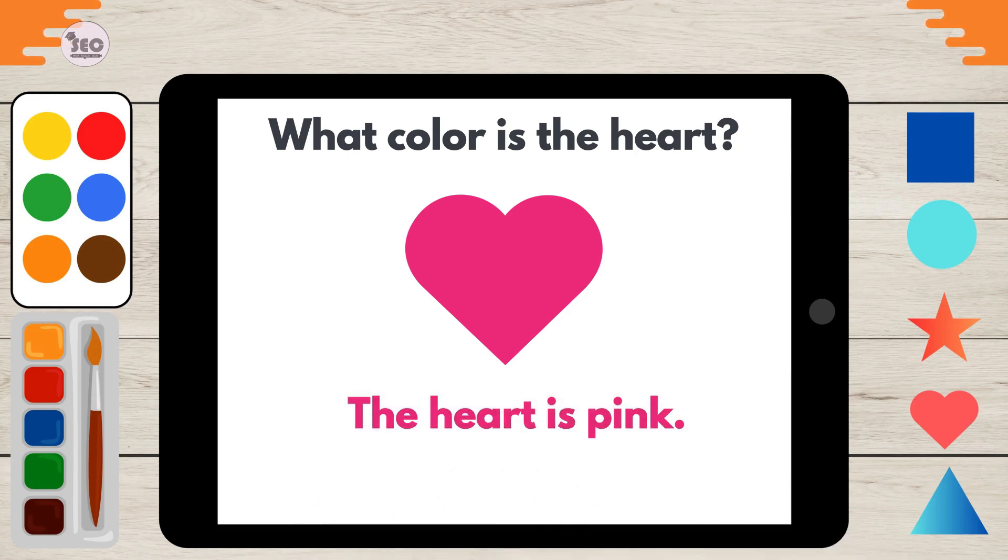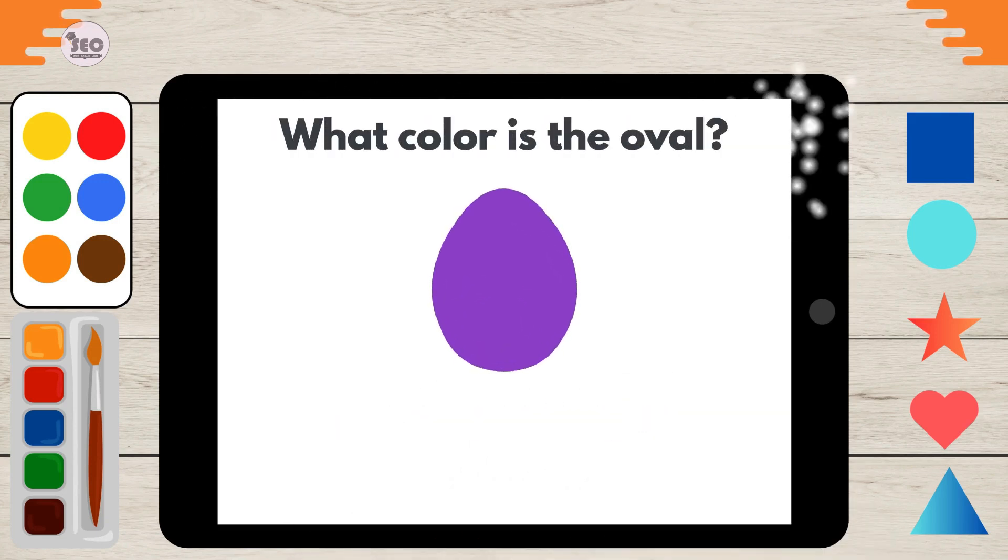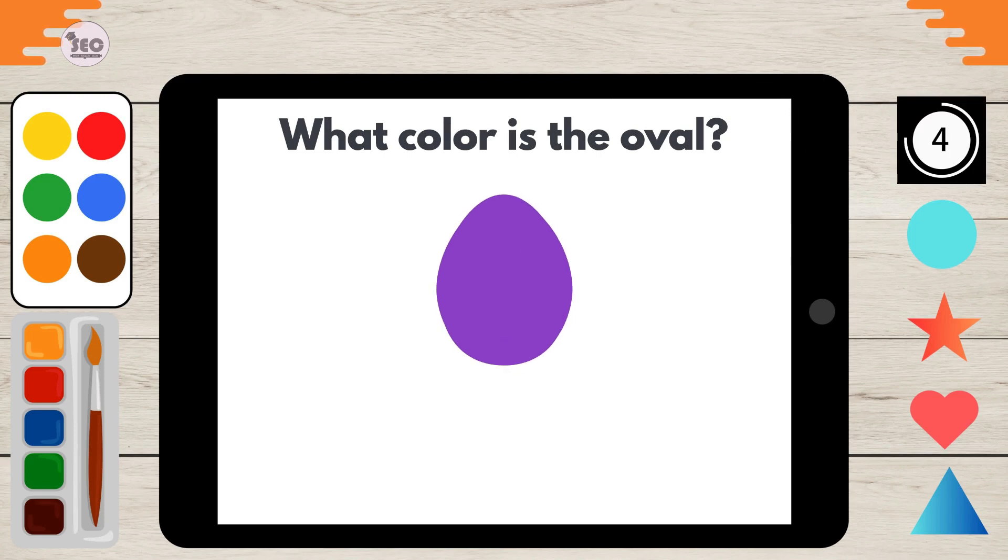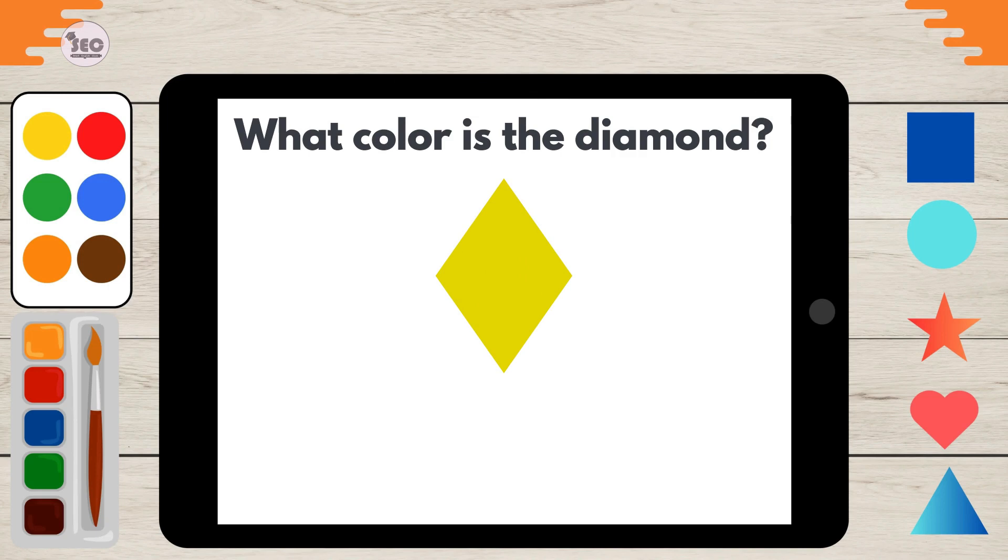The heart is pink. What color is the ellipse? The ellipse is cyan. What color is the oval? The oval is lavender. What color is the diamond?